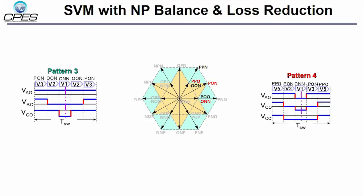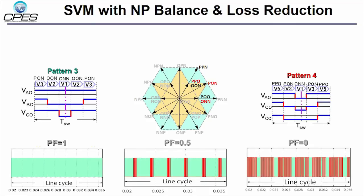For the two patterns, the following figures show how frequently they happen in a line cycle. Pattern 3 is indicated as green zone and pattern 4 as the red zone. The lower the power factor is, the higher possibilities for the undesired pattern 4 to happen.